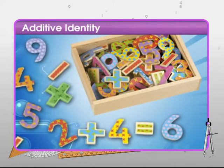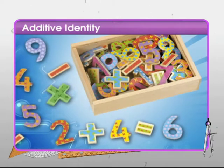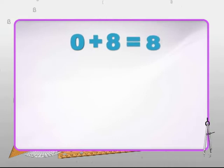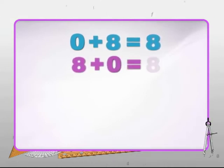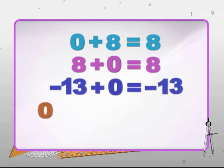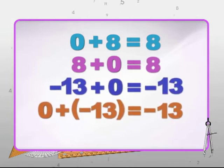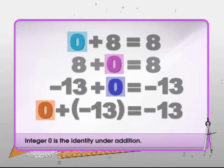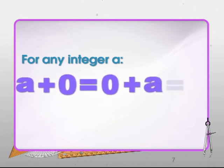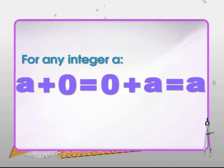An arithmetic operation works to change numbers, but when 0 is added to any integer, nothing happens — the number remains the same. This is the identity with respect to addition. So 0 is called the additive identity for integers. That is, a plus 0 equals 0 plus a equals a, for any integer a.